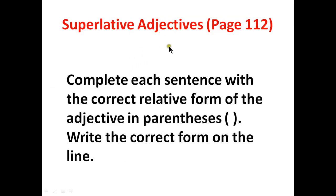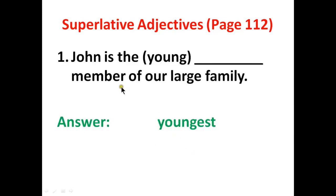Now we are going to do our main exercise. You will complete each sentence with the correct superlative form of the adjective in parentheses and write the correct form on the line. Number one: John is the youngest member of our large family. 'Young' is the main adjective. Since John is being compared with all the members in the family, you will use the superlative adjective: young, younger, youngest. The word 'youngest' is the answer for number one.